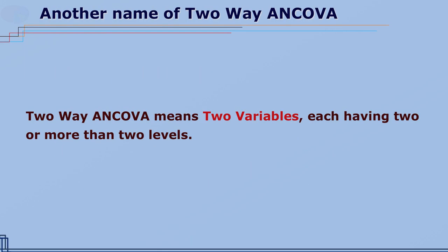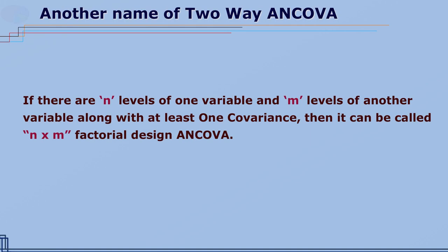Two-way ANCOVA means there are two variables, each having two or more levels. If there are n levels of one variable and m levels of another variable with at least one covariate, then it can be called an n-by-m factorial design ANCOVA with one covariate or more.